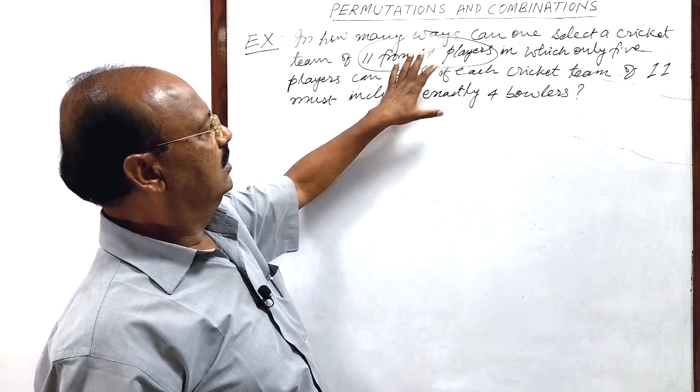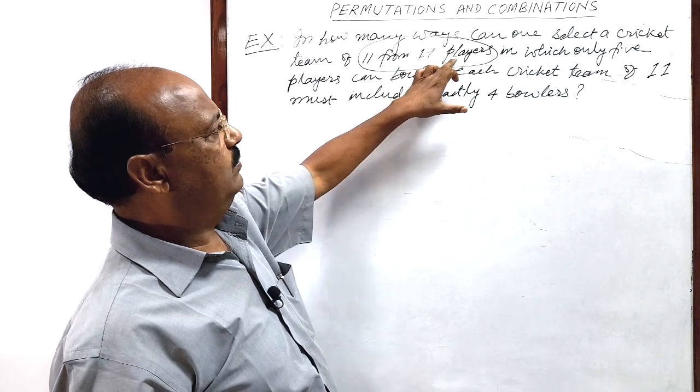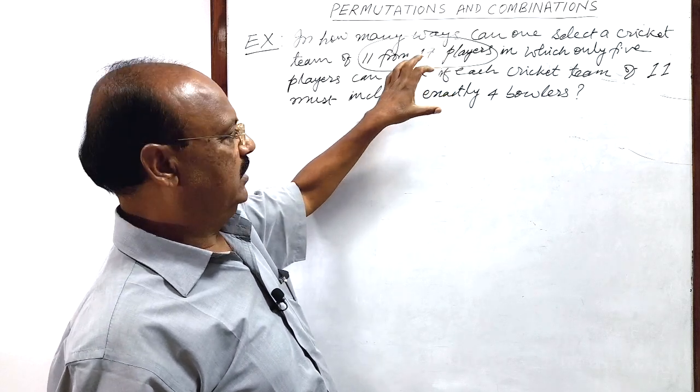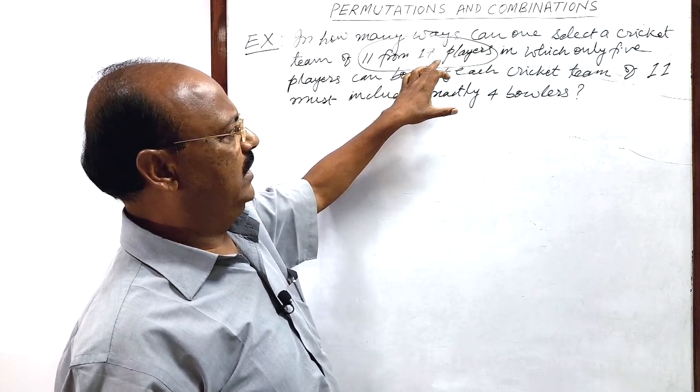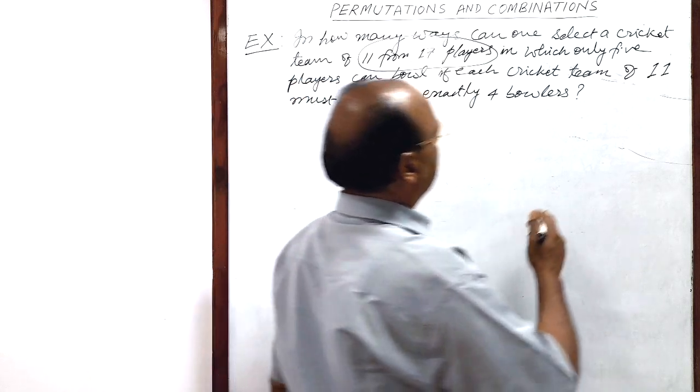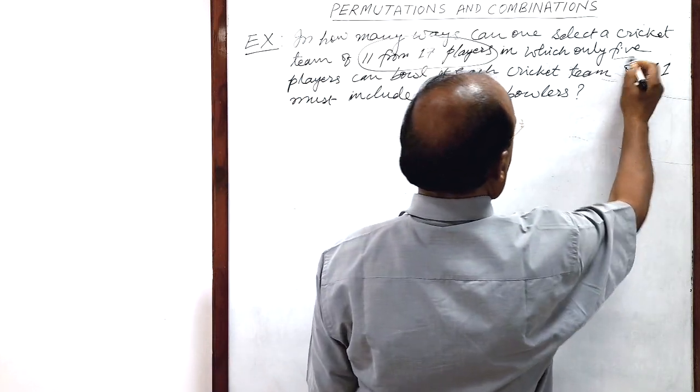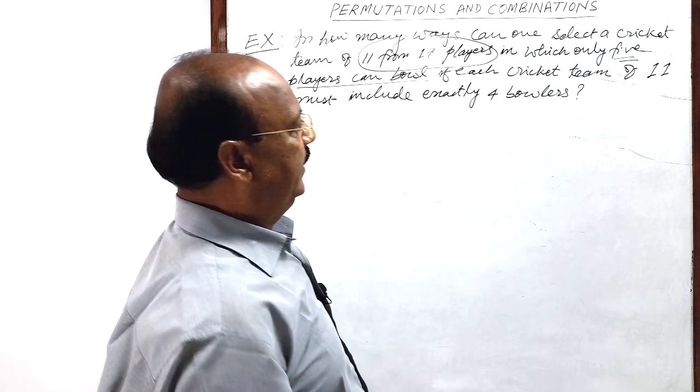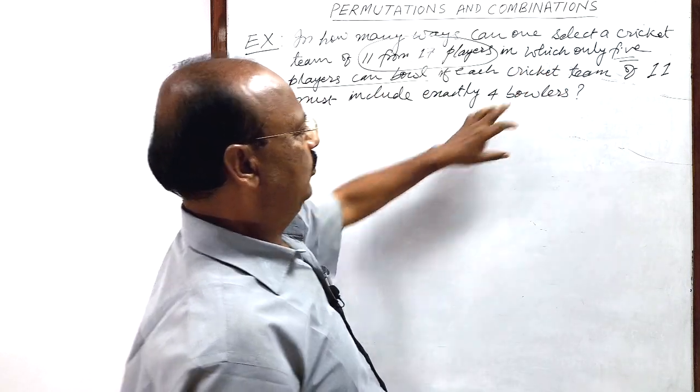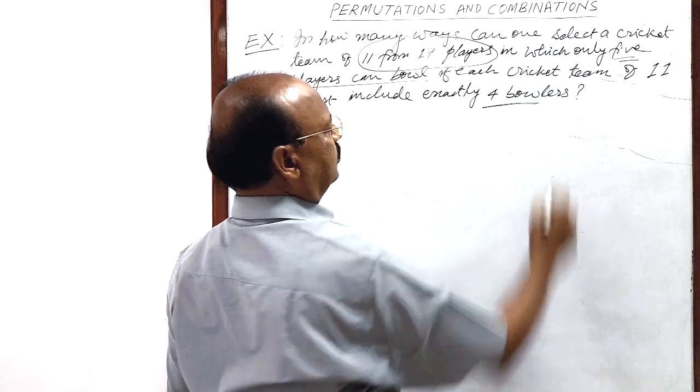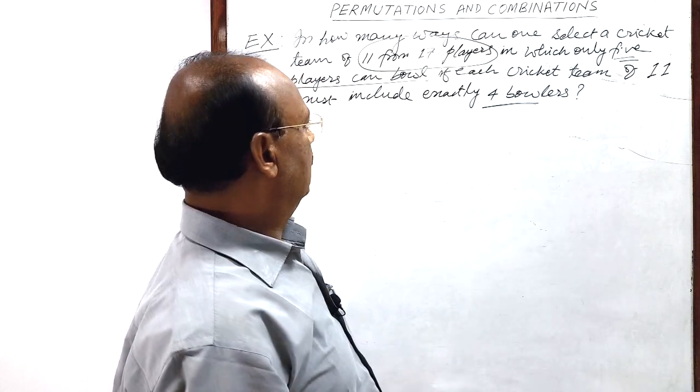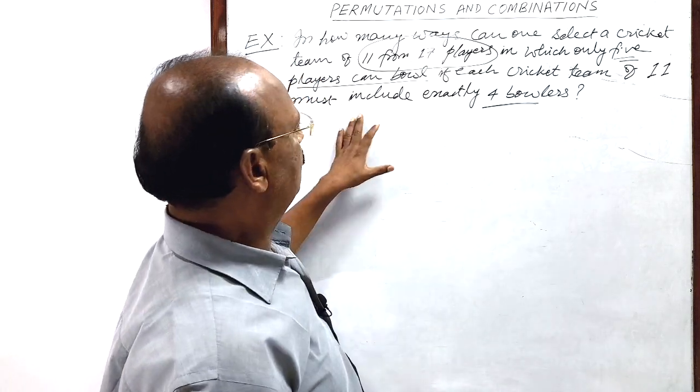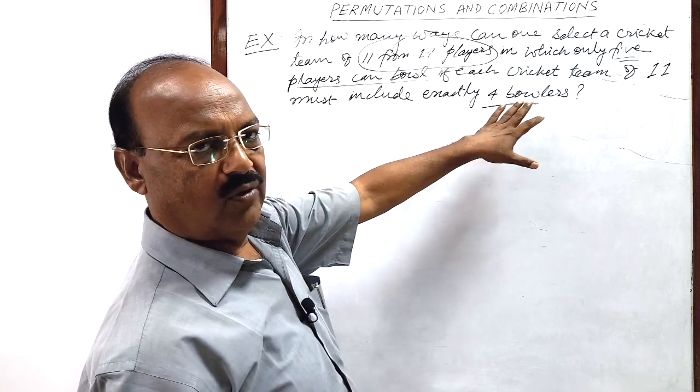So in this team of 17 players, how many can bowl? 5. 5 players can bowl. And out of these 5 players, we have to select 4 bowlers because each team must include exactly 4 bowlers.